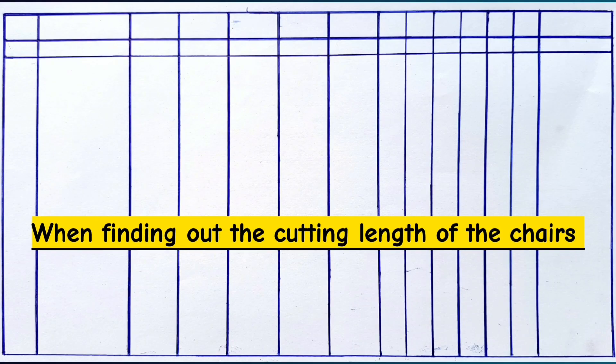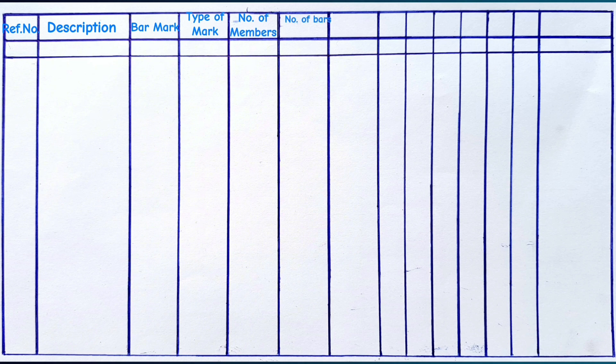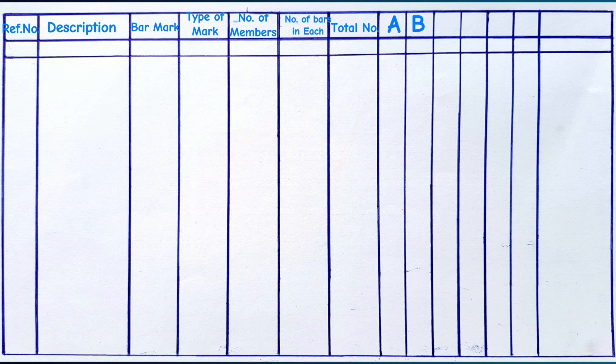When finding out the cutting length of the chairs, we draw a table with the reference number, description, bar mark, type of mark, number of members, number of bars in each, and the total number. This part has columns A, B, C, D, E, and the total cutting length of the bar.